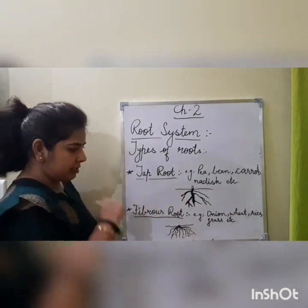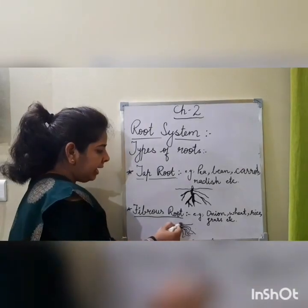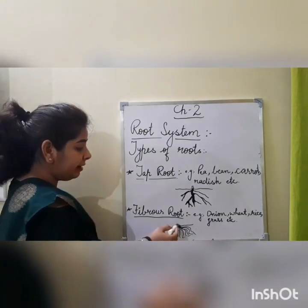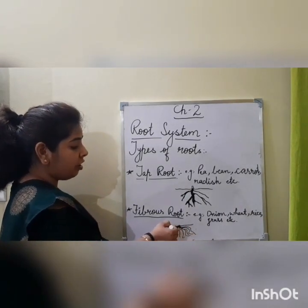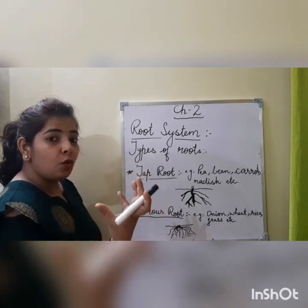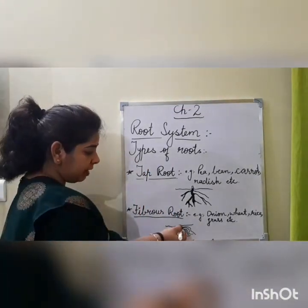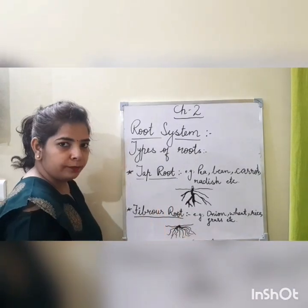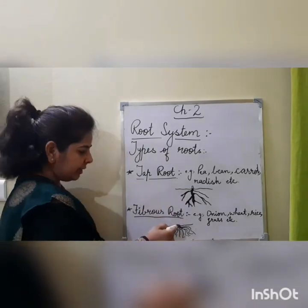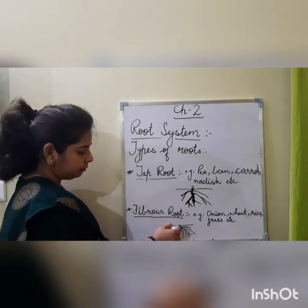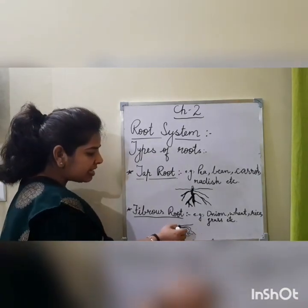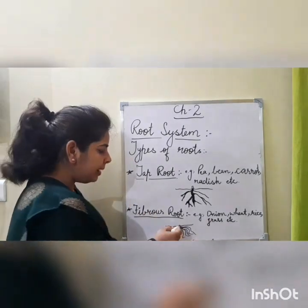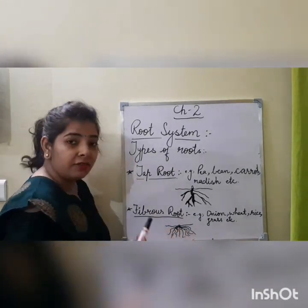Now, fibrous root. In fibrous root, at the point where the stem ends, you will find a cluster of roots — a jhund. All roots come out from this one point only. There is no main root and no secondary root — all are equal. They form a cluster where the stem meets the soil.